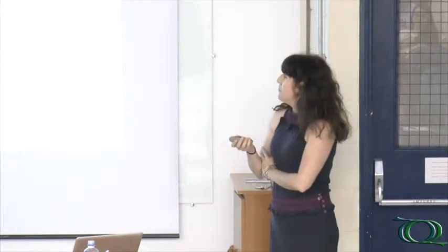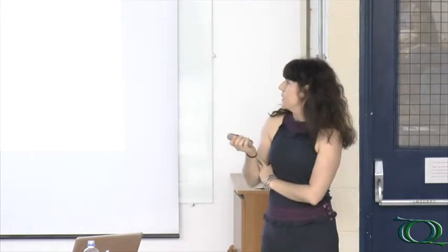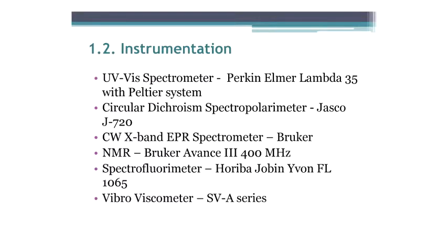So we are well equipped. Maybe not as well as you are here, because I'm quite impressed with all your installations and equipment. But for the work we do, we rely a lot on spectrophotometers. We have a circular dichroism spectropolarimeter, which is the same as the one you use here. And I also do a lot of work with continuous wave EPR, NMR of course. These are our routine instruments and also fluorescence. And we have a small equipment for measuring viscometry.